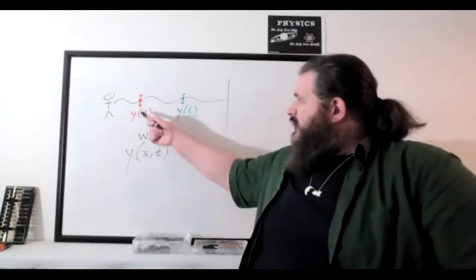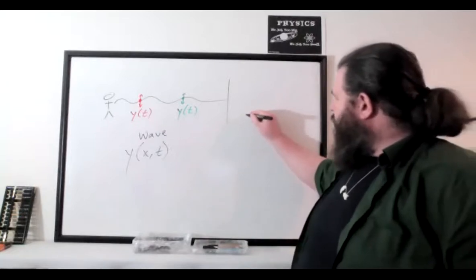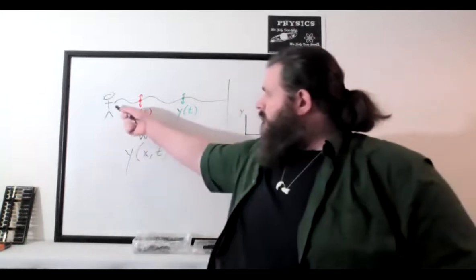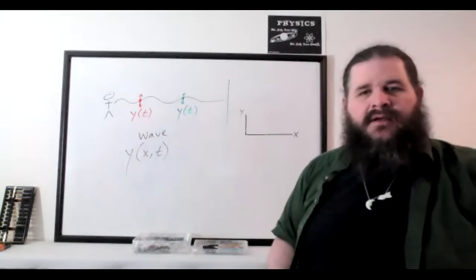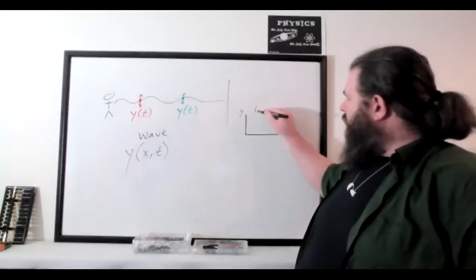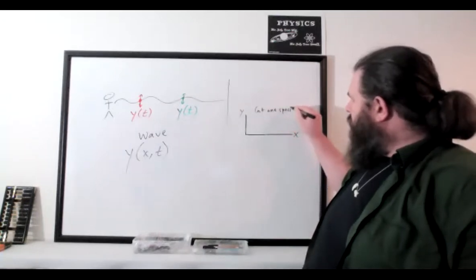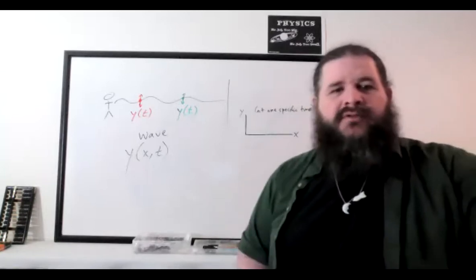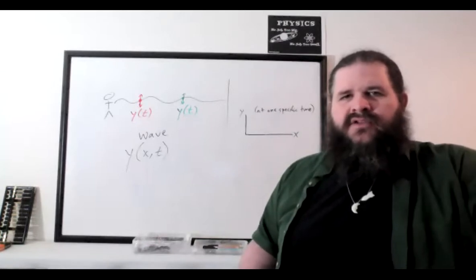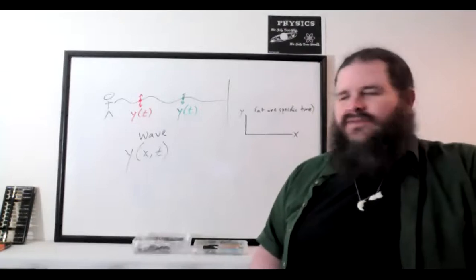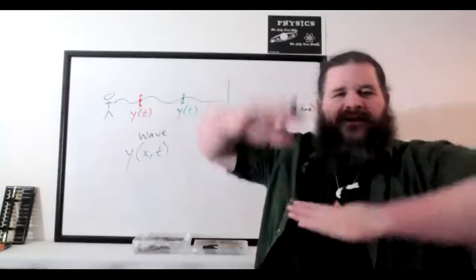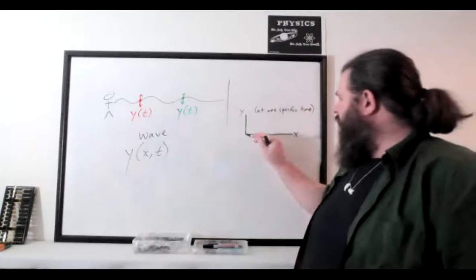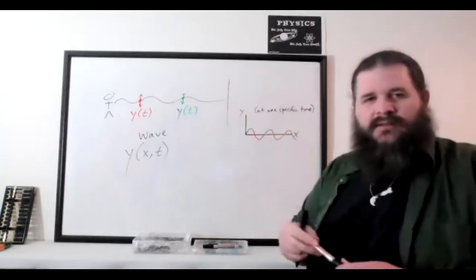If you look at it in terms of position, you can make an x versus y graph. An x versus y graph is just the shape of the rope at that instant in time — we're assuming it's at one specific time. For the x versus y graph, we're assuming we're freezing time, looking at a single paused frame of a video. If you press pause, at that instant the wave is going to have a sinusoidal shape. So the x versus y graph is going to be some sort of sine function.